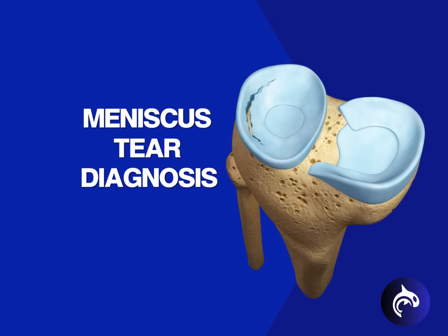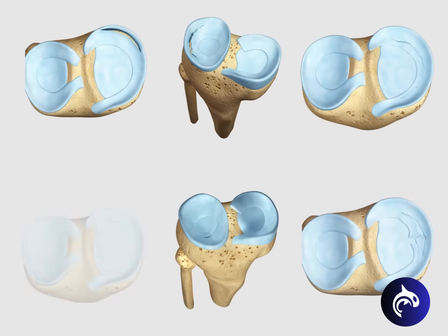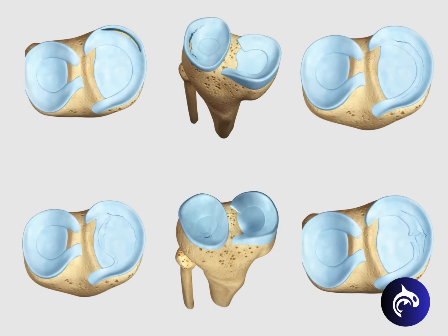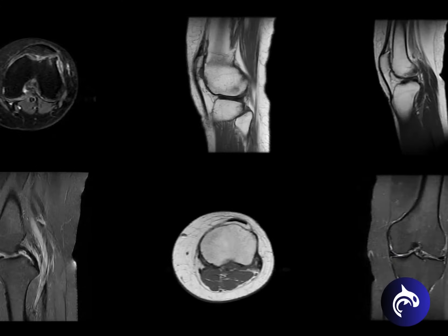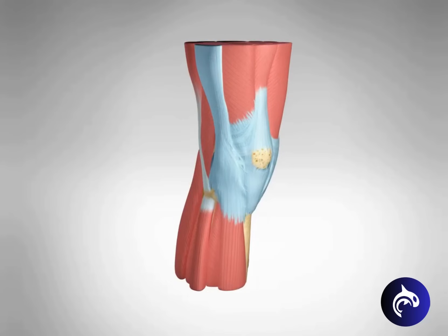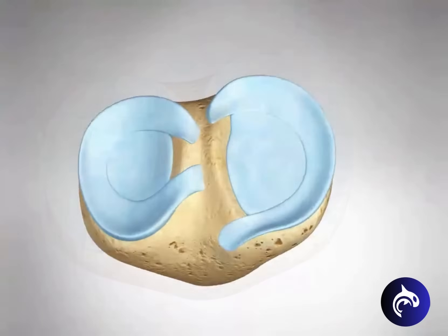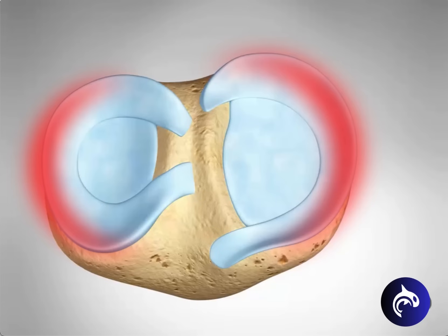Because treatment can vary greatly depending on the type and location of the tear, obtaining an accurate diagnosis is essential. An MRI can provide detailed images of the meniscus and confirm the tear. An important distinction for diagnosis will be whether the tear occurs in the more vascularized red zone with better blood supply, allowing for self-healing or repair.